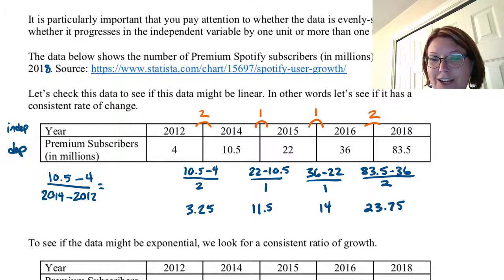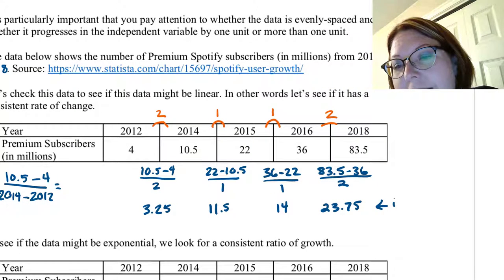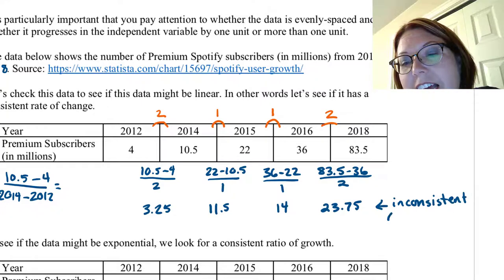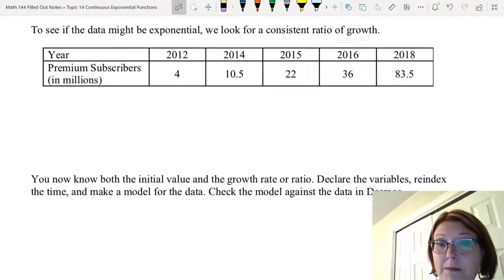Well, these average rates of change are all over the place. And because these are really inconsistent, I'm going to say this is likely not going to be linear. Let's move on and see if the data might be exponential.